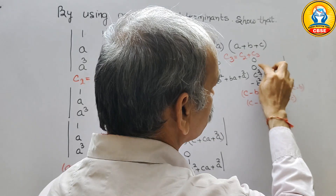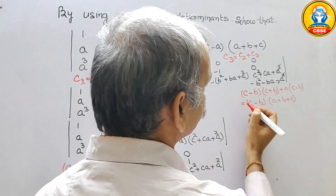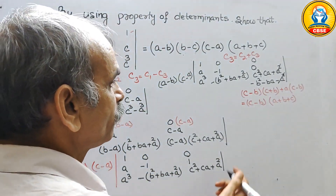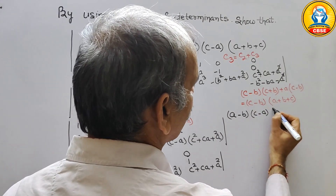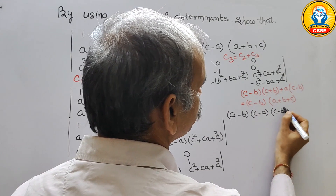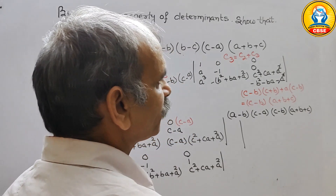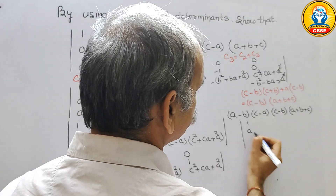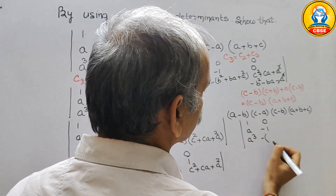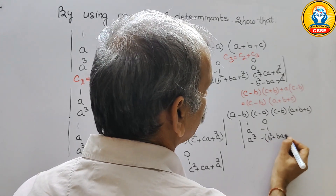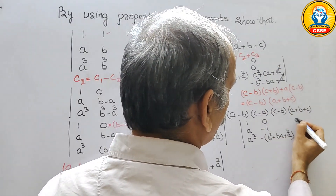So (c minus b) and (a plus b plus c) come outside the determinant. The remaining determinant is: first row 1, a, a³; second row 0, minus 1, minus(b² plus ba plus a²); third row 0, 0, 1.